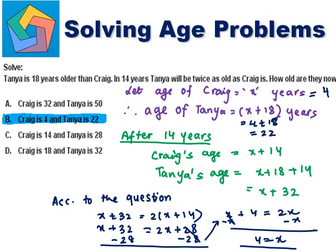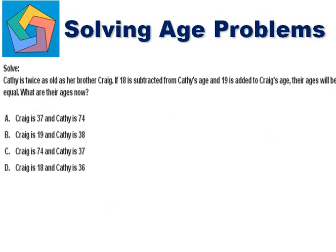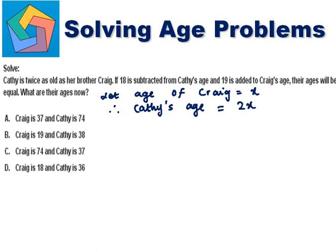Next problem. Solve. Kathy is twice as old as her brother Kreech. Let the age of Kreech be X. Therefore Kathy's age will be 2X, since Kathy is twice as old as her brother. If 18 is subtracted from Kathy's age — that's 2X minus 18 — and 19 is added to Kreech's age — X plus 19 — their ages will be equal. So this is according to the question.